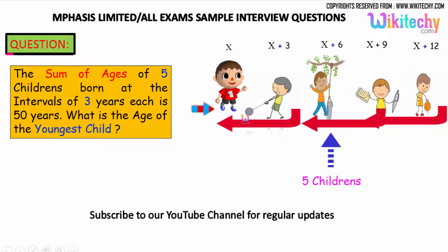So the youngest child is this one, so x, x plus 3, x plus 6, x plus 9, x plus 12. So the sum of the ages of all the people is 50 and what is the value of x?